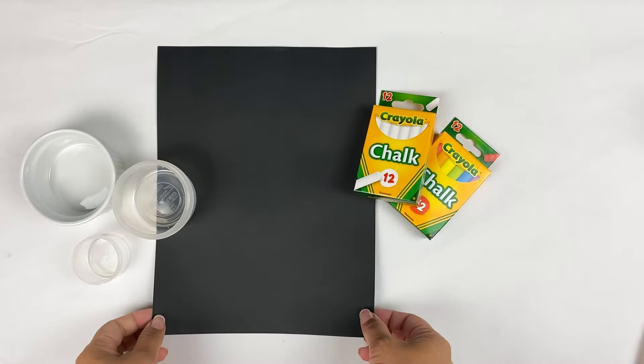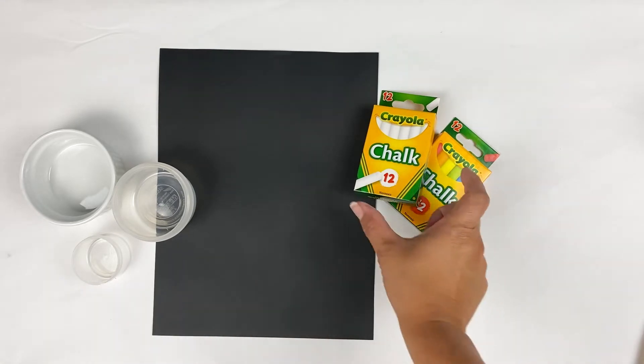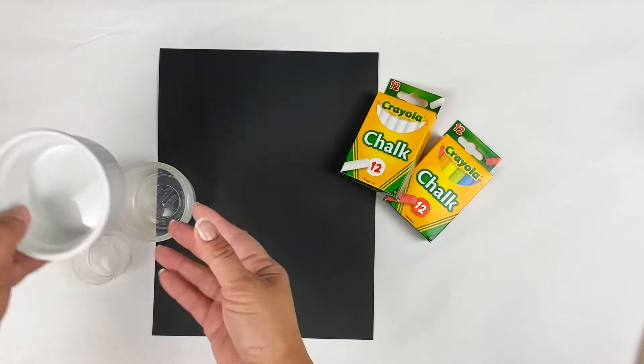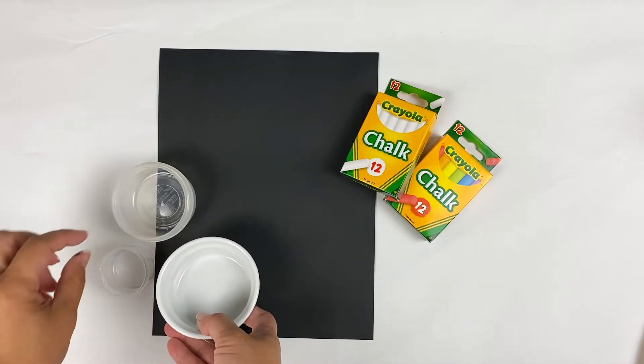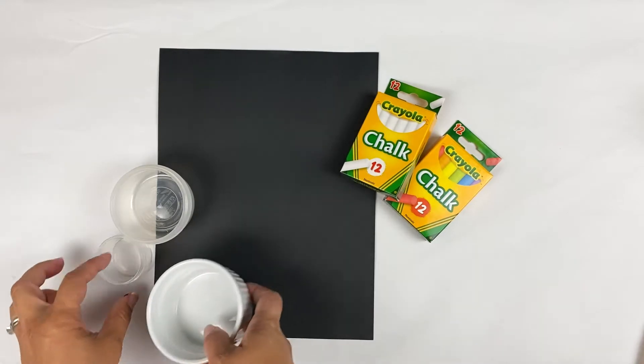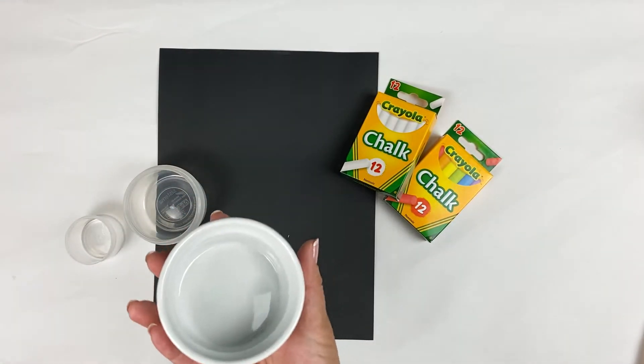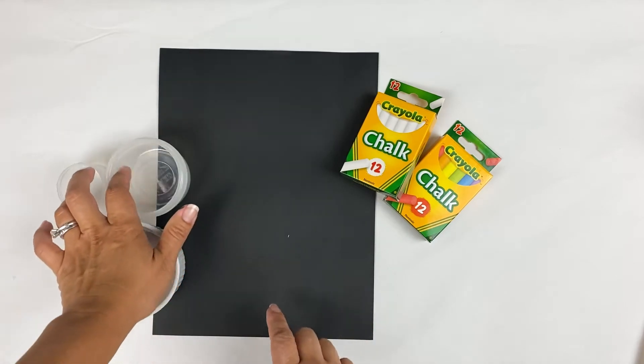Today we're going to need a black piece of paper, white chalk, and multicolored chalk. And also three different circle sizes. So you can find anything that you have at home. I'm using Tupperware and this dish and I'm going to use it to make my circles.